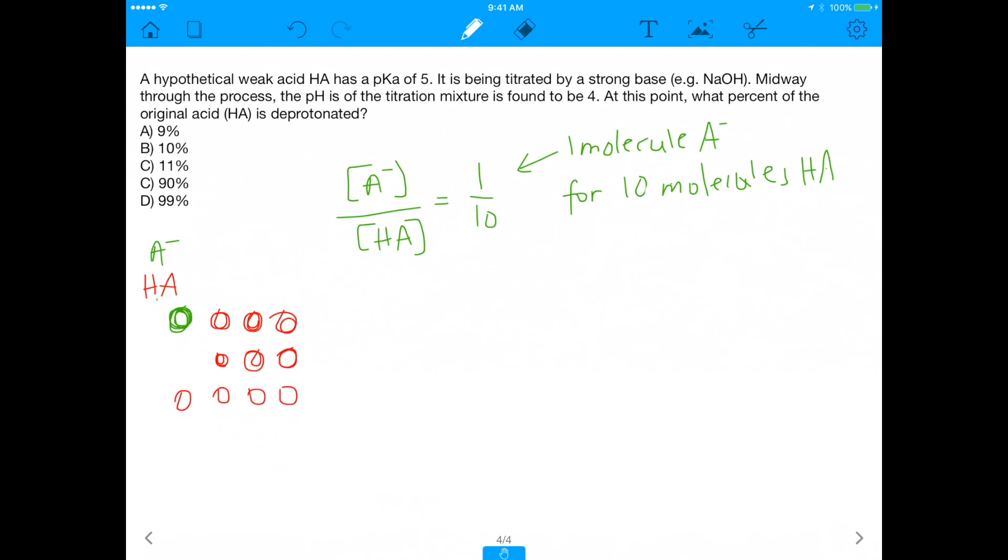So what percent of HA is dissociated? Well, you have 1 molecule of A minus for every, how many total molecules? How many total molecules are here. There are actually 11 total molecules, right? So the percent dissociated is 1 out of 11. Because 1 A minus for every 10 HA, which means that 1 out of 11 molecules total is how many are dissociated.